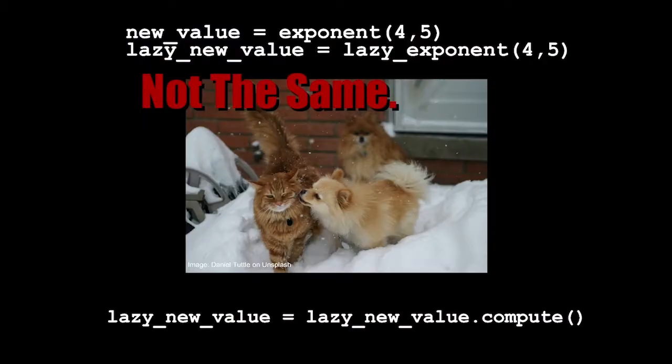So, to reiterate, these two functions look very similar and in fact have the same inner contents and the same arguments, but they are not the same and the results will not be the same. When you calculate the exponent function, you get back the numeric value immediately, but when you calculate the lazy exponent, what you get is a delayed object that is waiting for you to run the compute method as shown at the bottom here. And that compute method will then return the numeric value because it will calculate when you run compute no matter how long you wait to run that value.